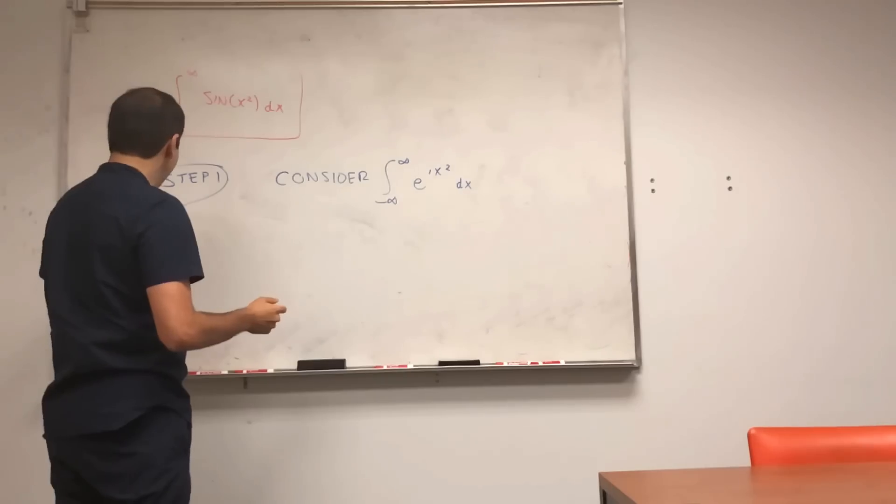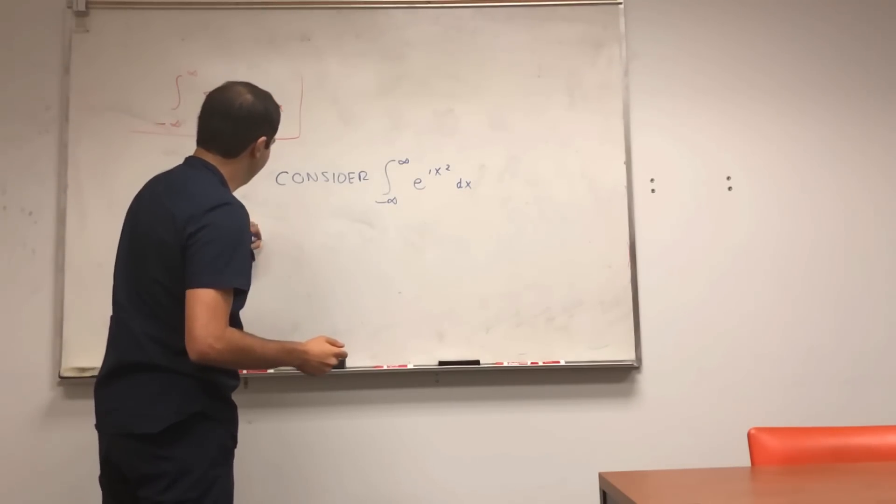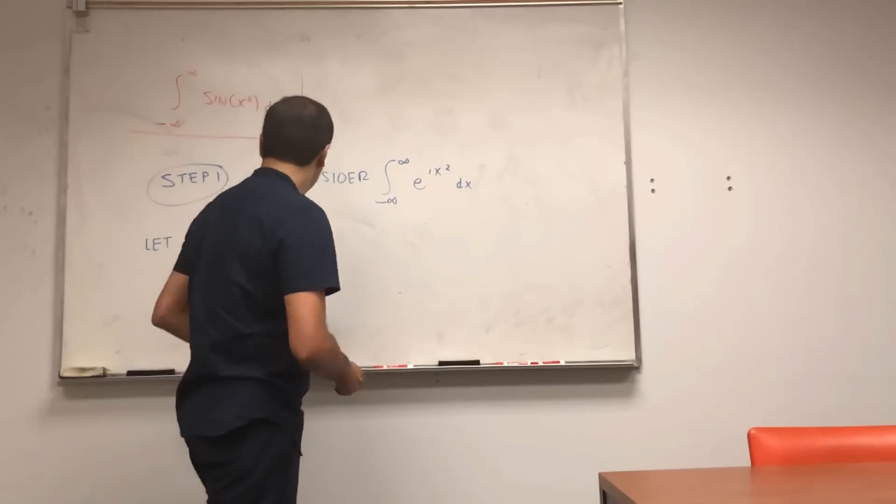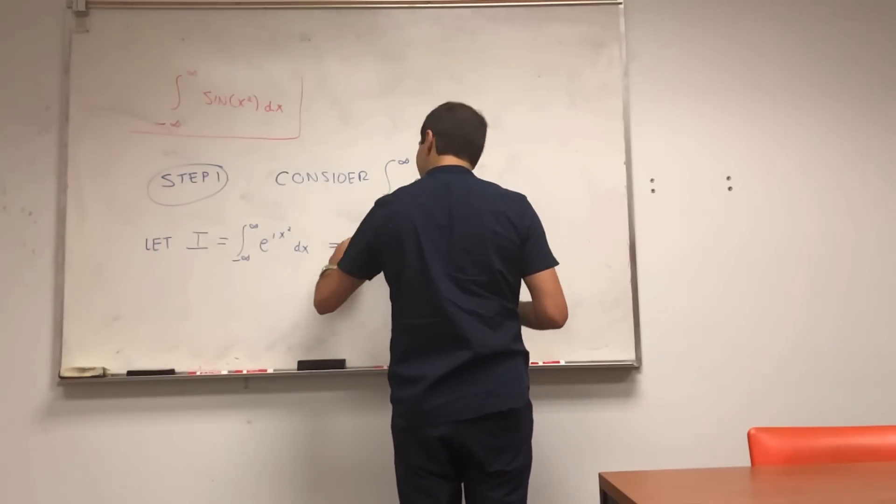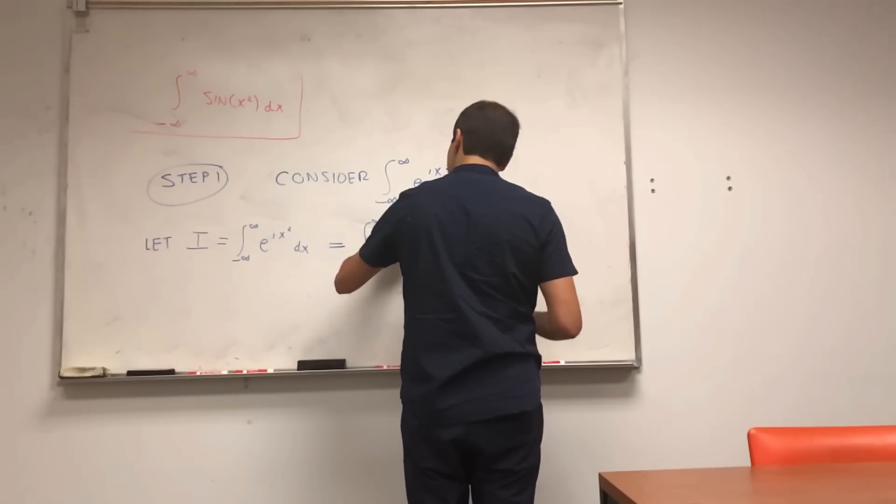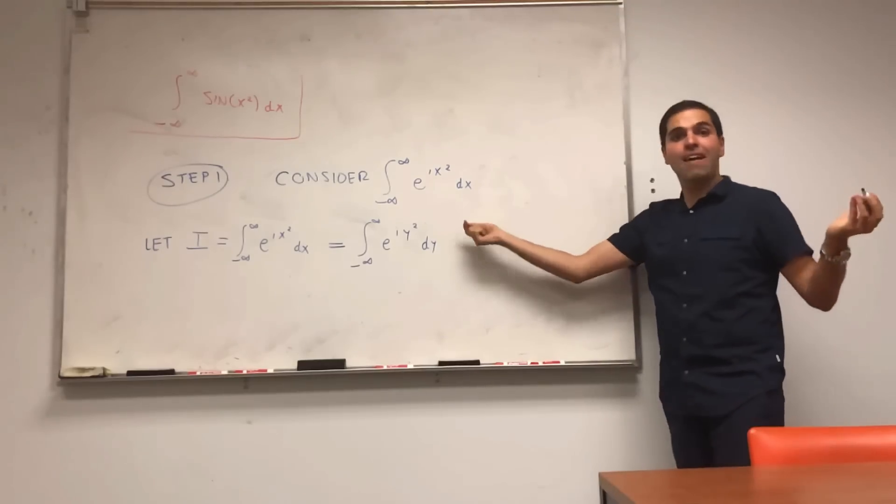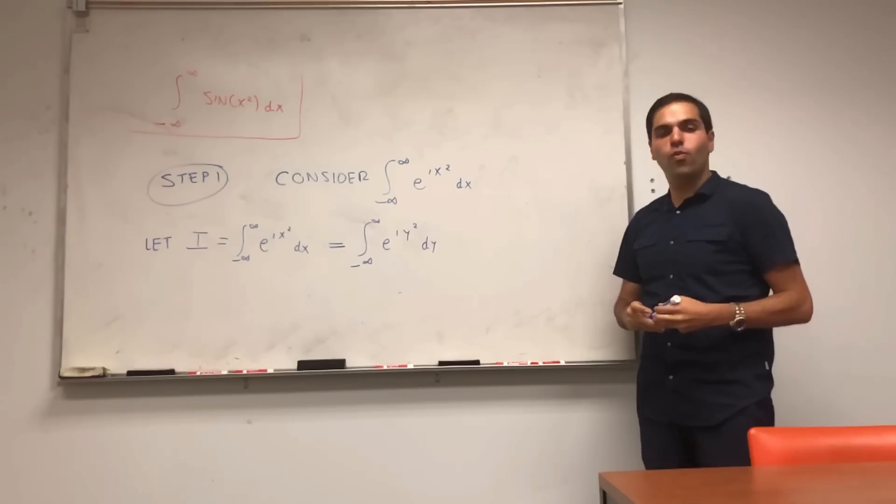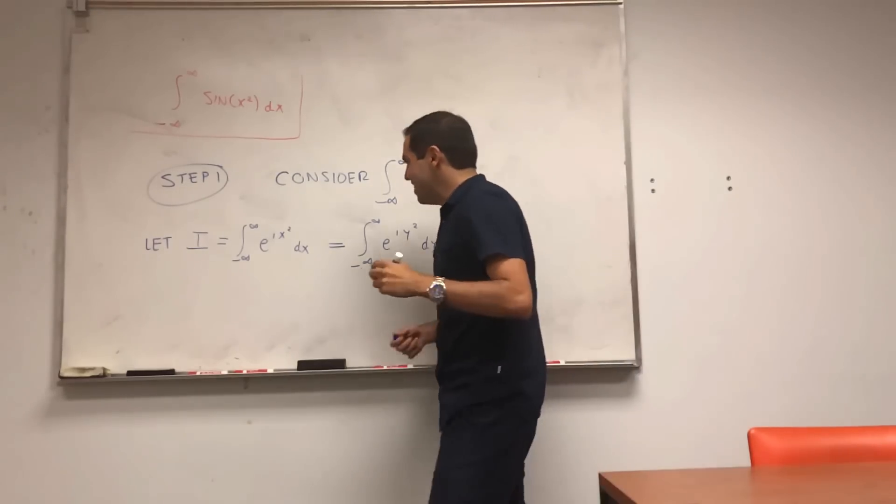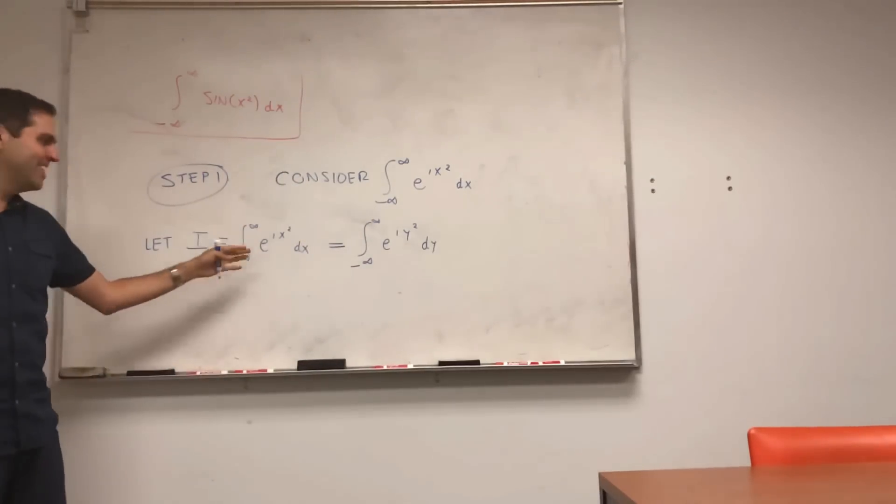So consider, so let I be the integral from minus infinity to infinity of e to the ix squared dx, which if you want, you can just rewrite this as the integral from minus infinity to infinity of e to the iy squared dy. Again, it doesn't matter which variable you use. You could use x, y, z, heart, dolphin, anything. Okay? But don't use i, or e, or two, because you already used that here.